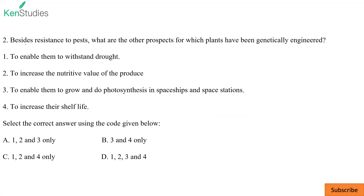Question number two: besides resistance to pests, what are the other prospects for which plants have been genetically engineered — GM crops? First, to enable them to withstand drought: correct. Second, to increase the nutritive value of the produce: correct. Third, to enable them to grow and do photosynthesis in a space station: not the target. Fourth, to increase their shelf life: correct. So options one, two, and four are correct. C is the right answer.